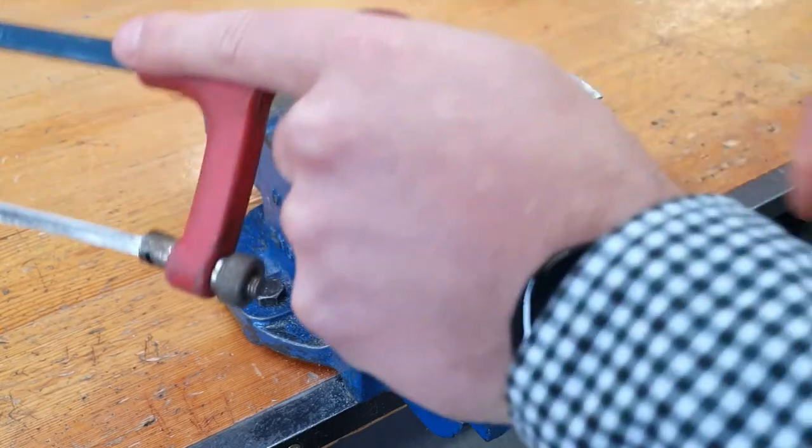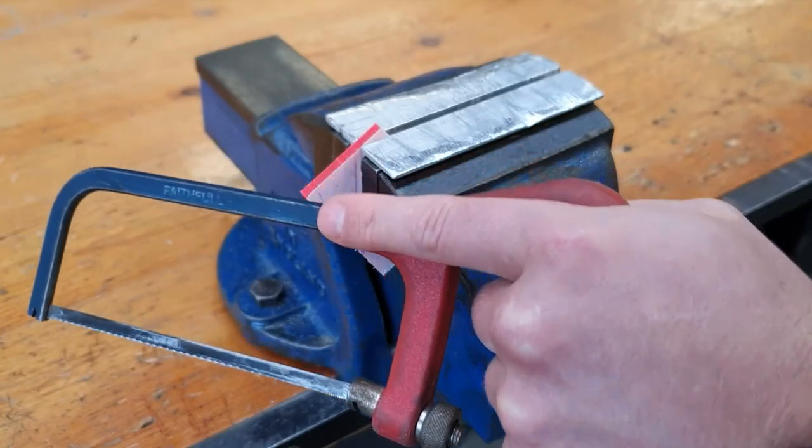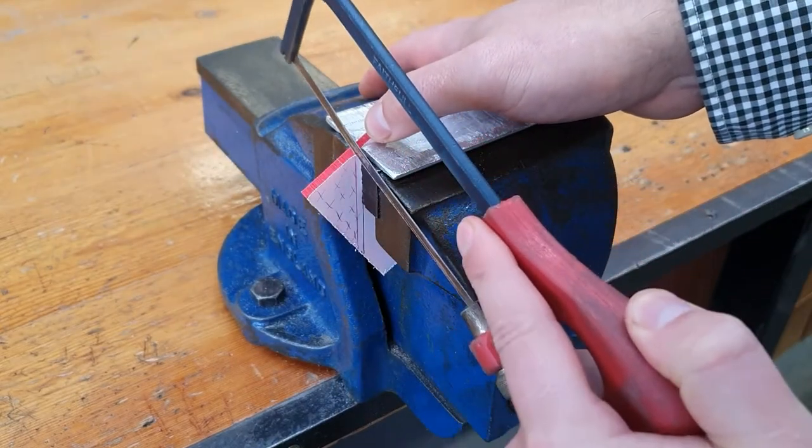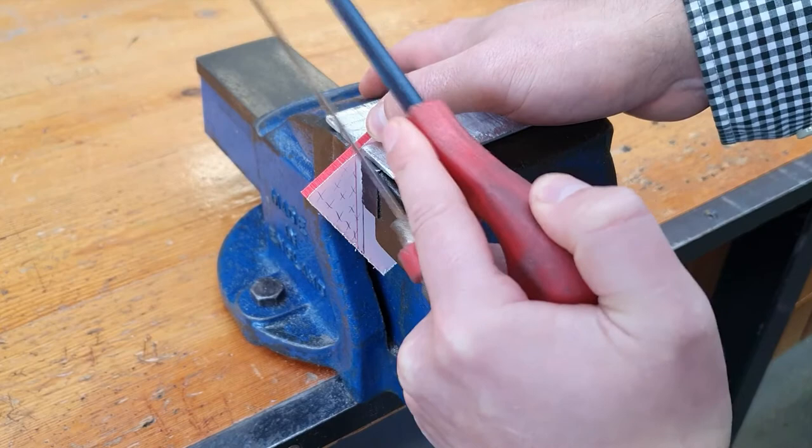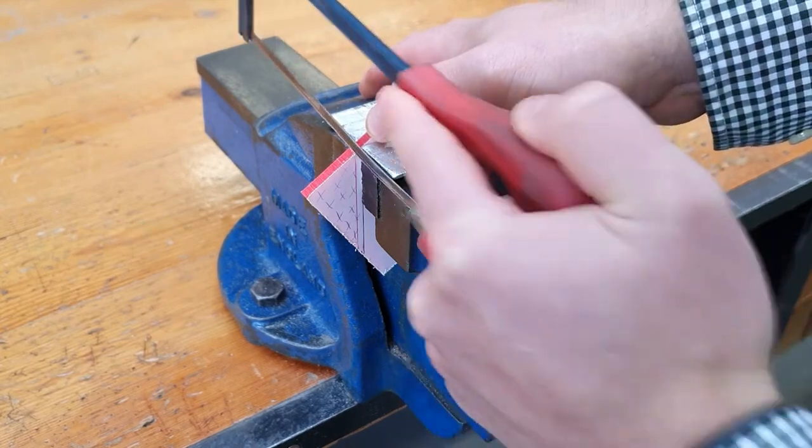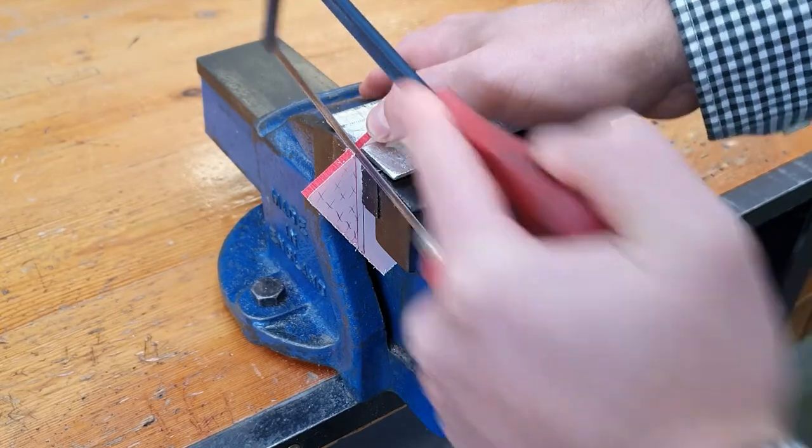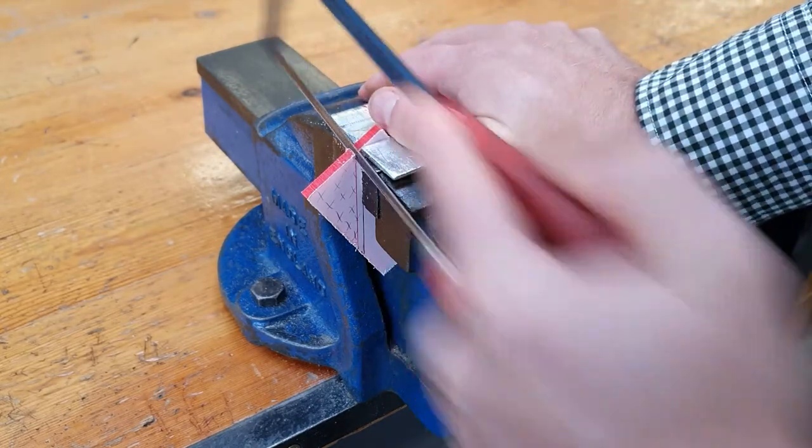Now we're ready to hacksaw. We hold the hacksaw with a pistol grip, place it on the edge, and I do three backstrokes normally before I start my cut. Then it's nice and gently back and forth.